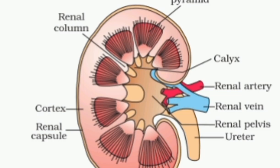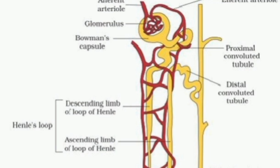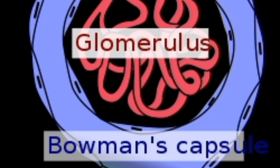Each kidney is made up of approximately more than 1 million microscopic and thin tubular structural functional units called nephrons. The nephrons are the structural functional units of the human excretory system. Each nephron has basically two parts: one is the Malpighian body and the other one is the renal tubule. The Malpighian body is composed of a network of blood capillaries called glomerulus and a double-walled cup called Bowman's capsule. Glomerulus and Bowman's capsule together form the Malpighian body.